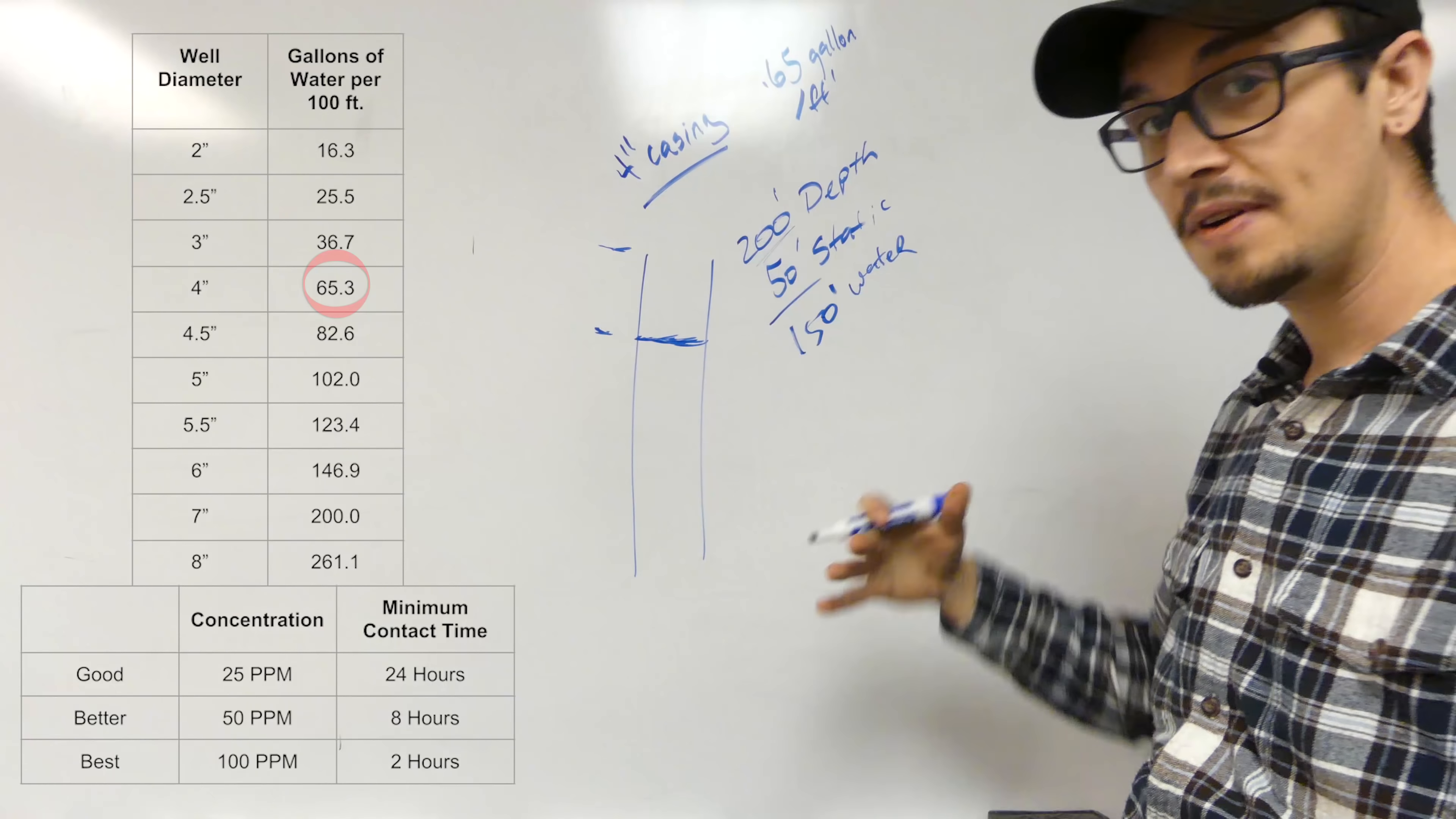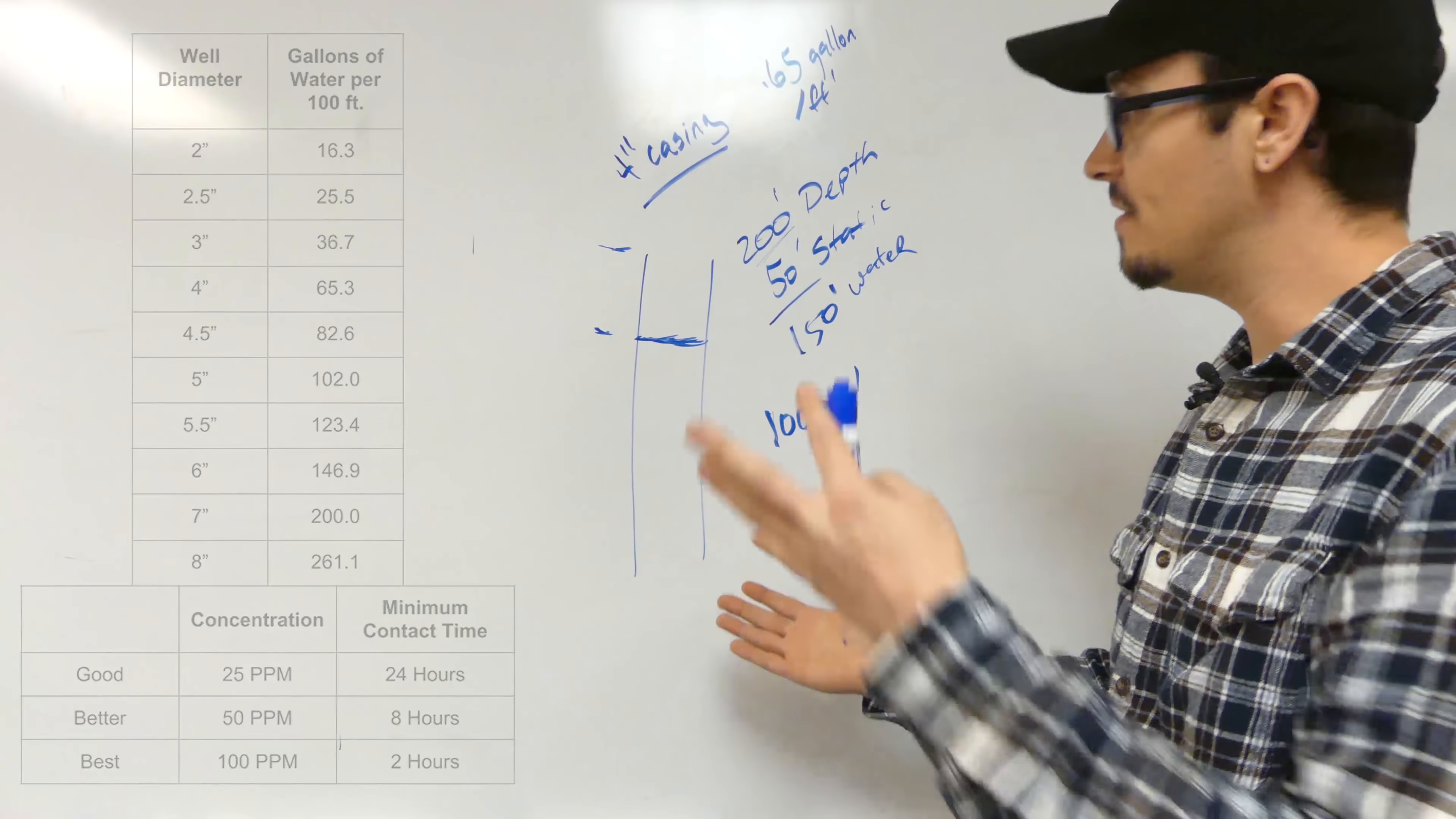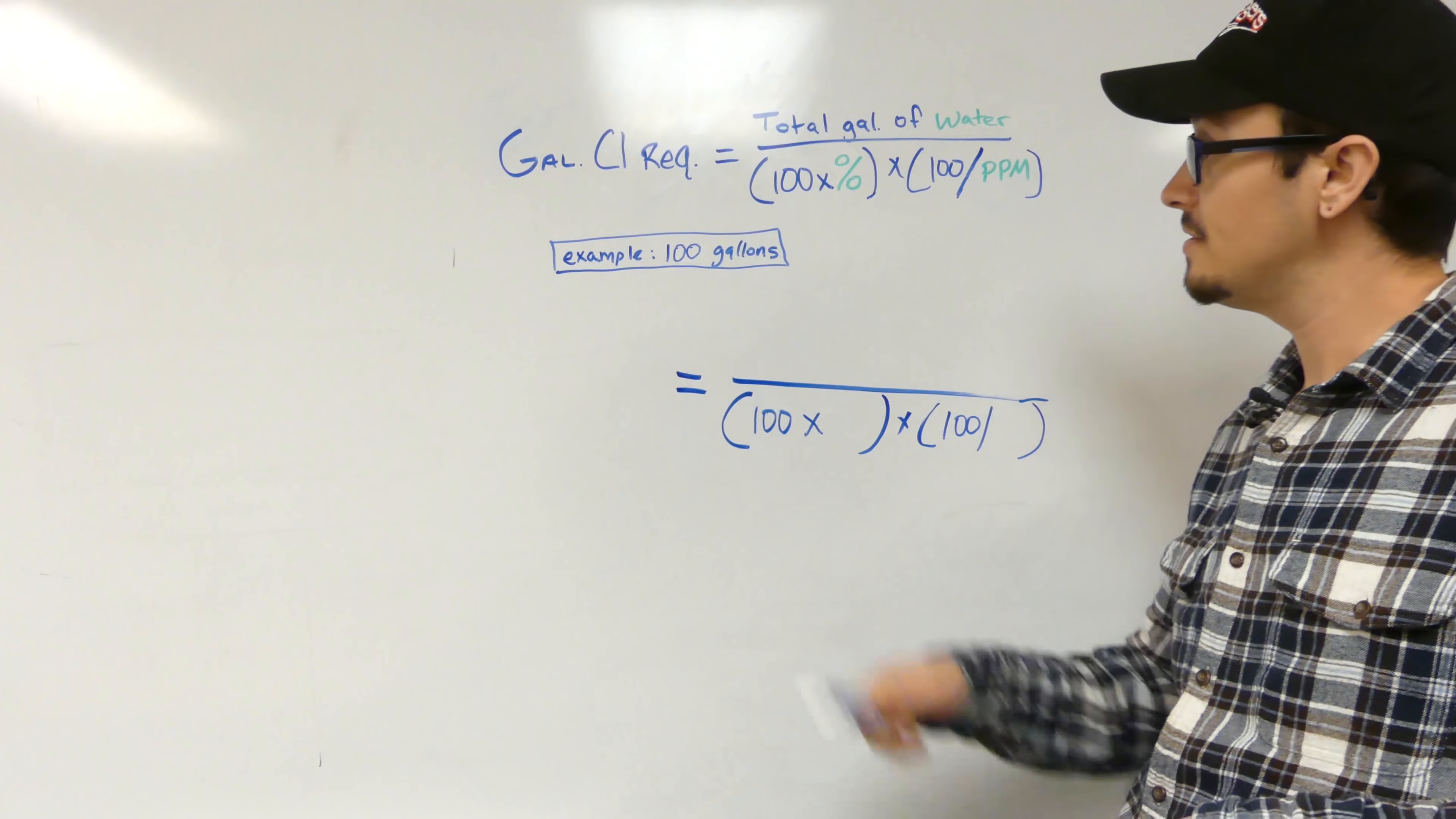As we can see in the chart that we've shown, it's actually 65 gallons per 100 feet or 0.65 gallons per foot. Loosely, we can just say that this is 100 gallons, which we're going to round up to, and that's to be safe. That's how you calculate the volume of water in your well so you can take it to the next step with the simple formula to calculate how much chlorine to use to accomplish the super chlorination.